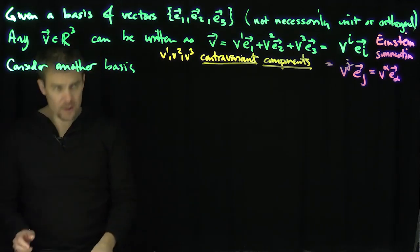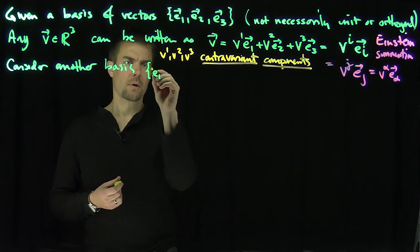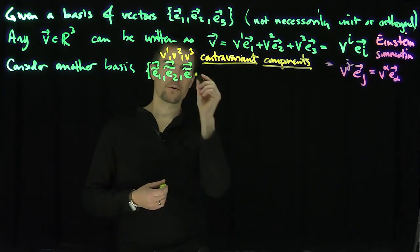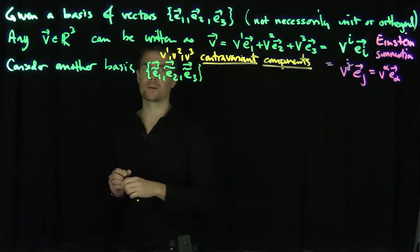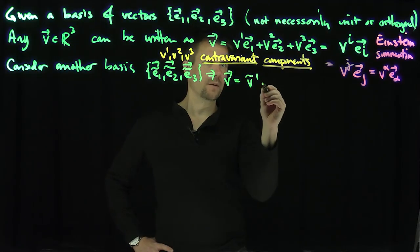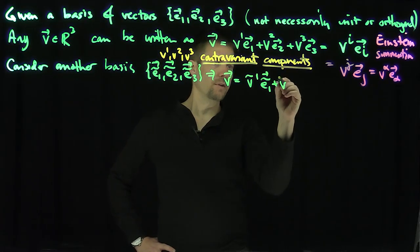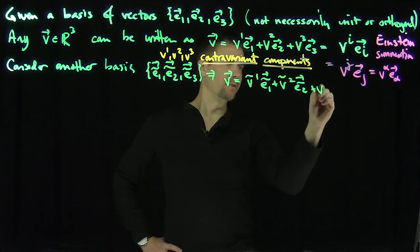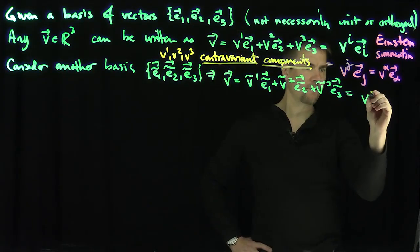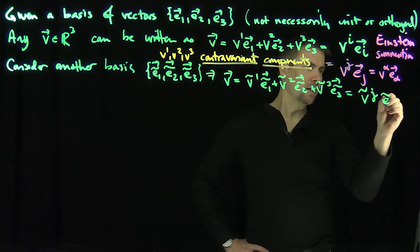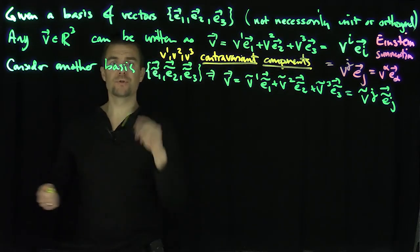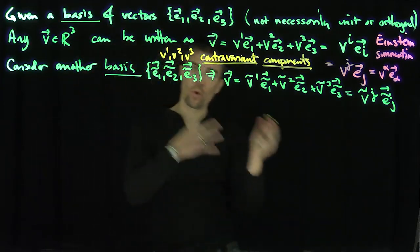Now consider another basis: e1-tilde, e2-tilde, e3-tilde. Using tilde notation to denote this different basis. Then v can also be written as v1̃·ẽ1 plus v2̃·ẽ2 plus v3̃·ẽ3, which we can write concisely as ṽ^j · ẽ_j.